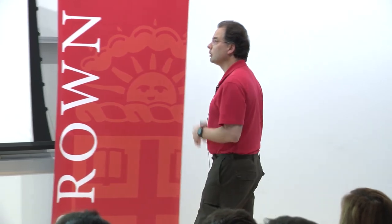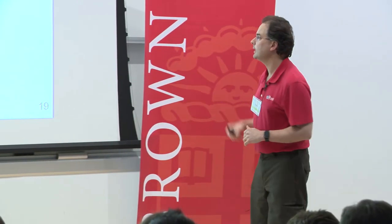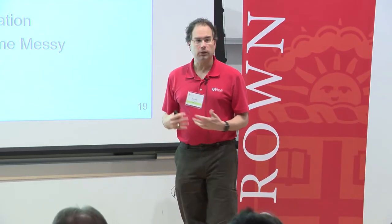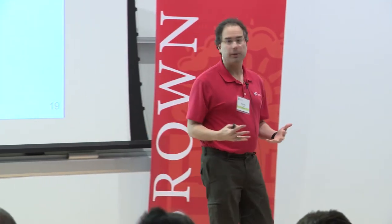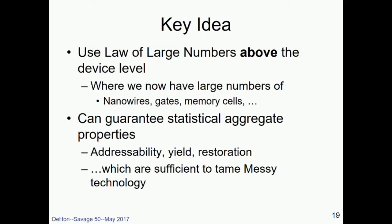So the key idea that starts coming out here is that we want to use law of large numbers above the device level, where we now have large numbers of things like nanowires and gates and memory cells. And then we do that, we can start guaranteeing statistically aggregate properties like addressability, yield, and restoration. And that's going to be sufficient to attain this messy nanotechnology. And we see that counting or analysis is really a key to achieving these designs.